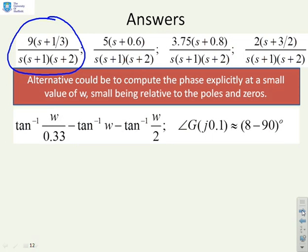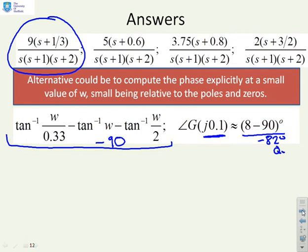So the key parts of the phase are this bit here. I've got tan⁻¹(ω/0.33) - tan⁻¹(ω) - tan⁻¹(ω/2), and indeed there's also a minus 90 from the integrator. What I'll do next is substitute in a small value of omega, there is 0.1, which is small compared to the 1, 2, and a third. I get this: 8 minus 90, in other words minus 82 degrees, and so we can see that this system starts in quadrant 4.